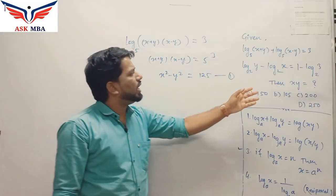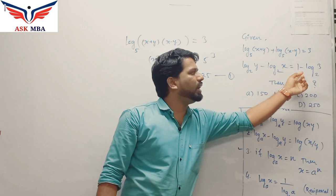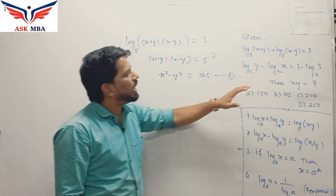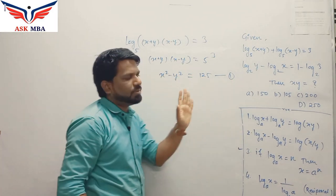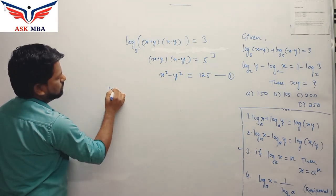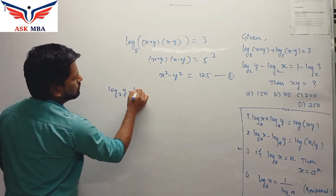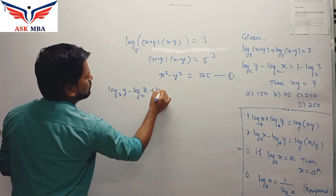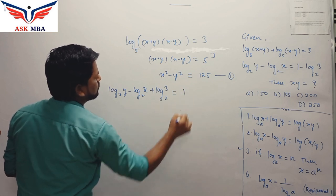Second, we have log y base 2 minus log x base 2 equal to 1 minus log 3 base 2. Again, we can clearly see the base is common. So we will try to put all the log terms together and all the constant terms together.